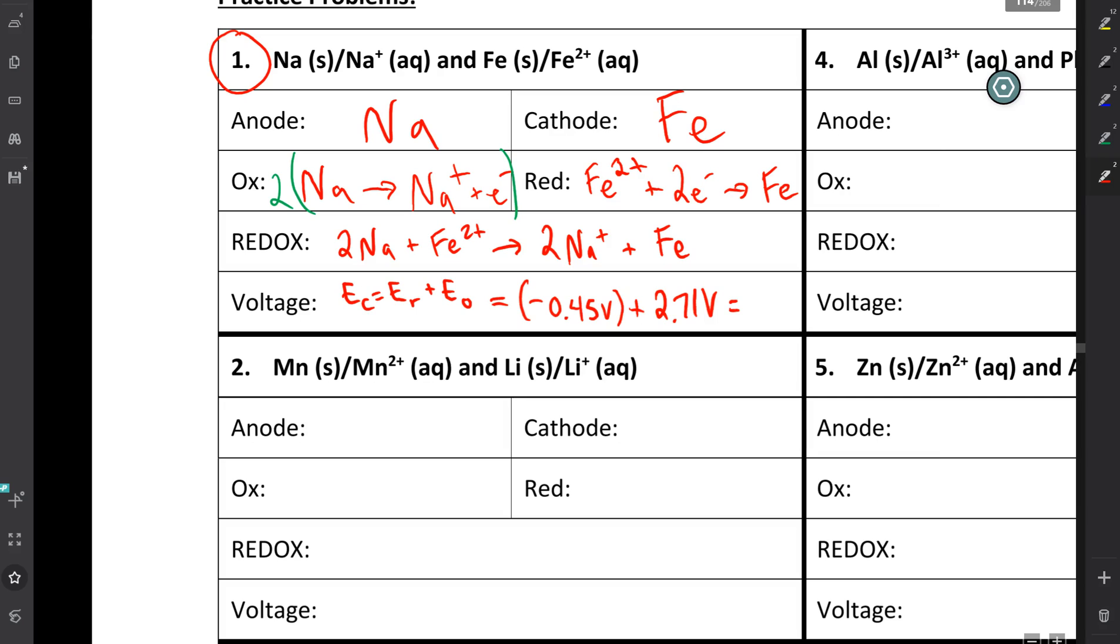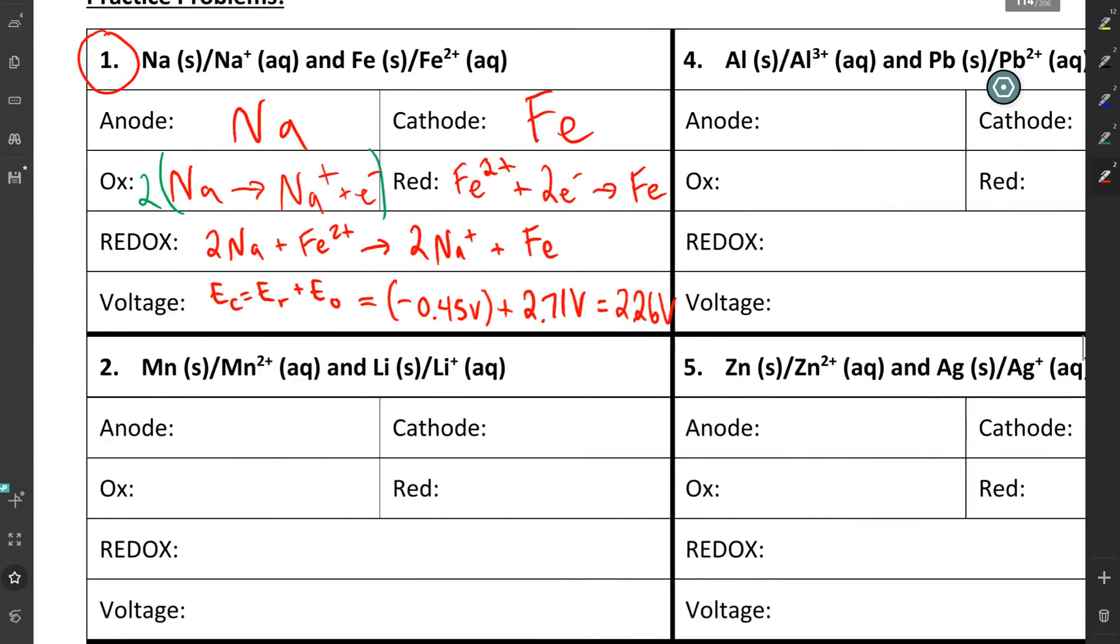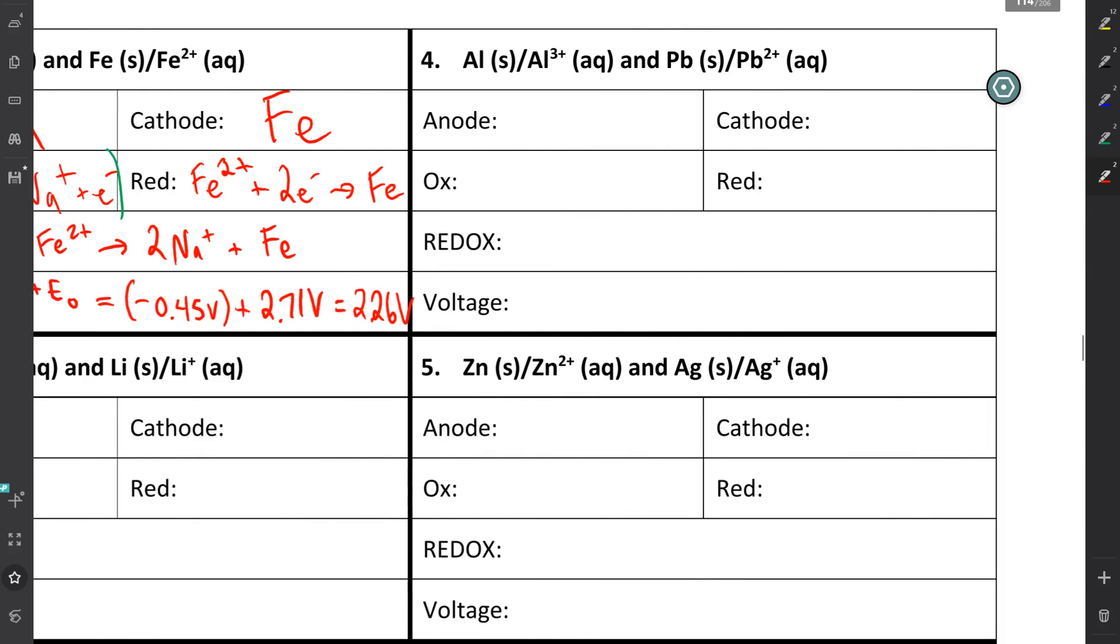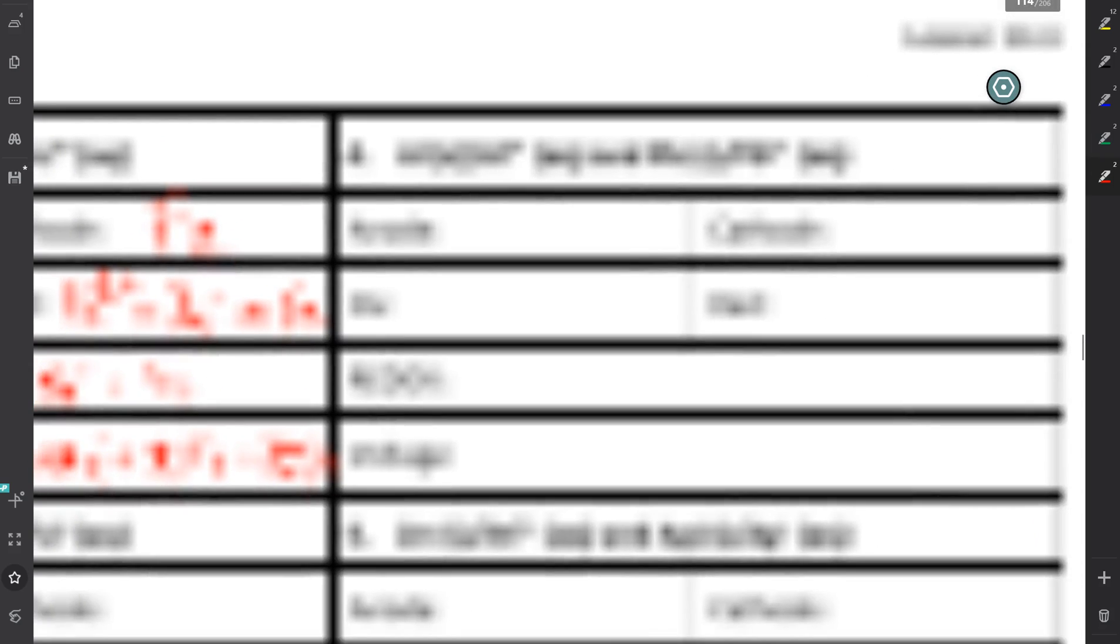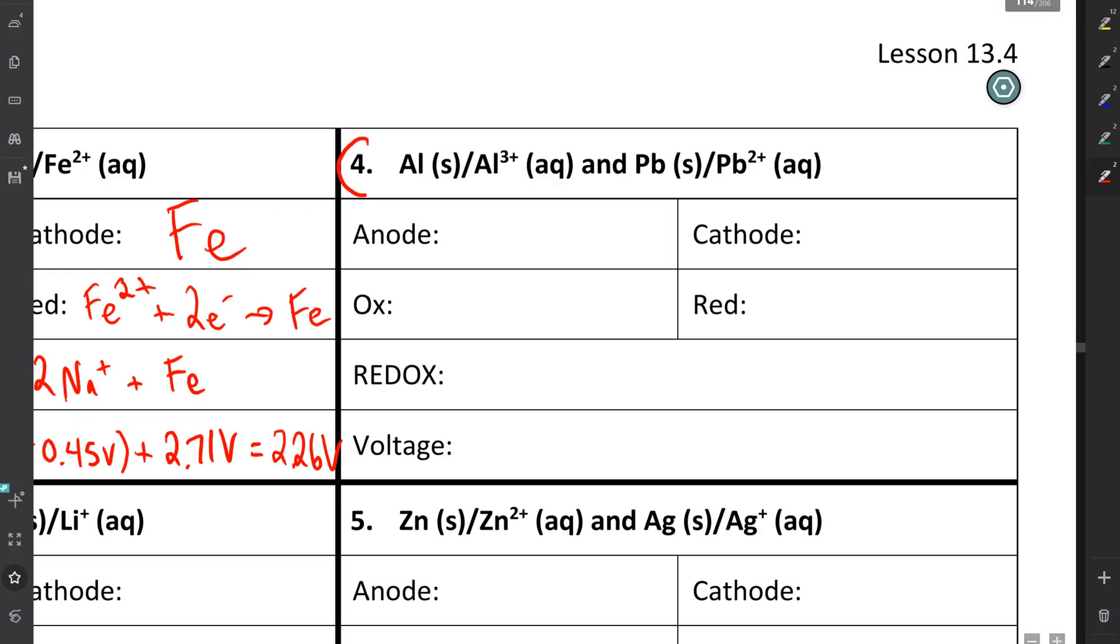This is about as complicated as the math is going to get this unit. And you will come up with hopefully 2.26 volts. I know there is not a ton of space there. Actually, if you want to skip out on showing your formula, I'll let that slide because I did not give you a lot of space. All right. Why don't you go ahead and try question number four on your own. I will get the answers posted in just a minute. Pause the video. Try it out.